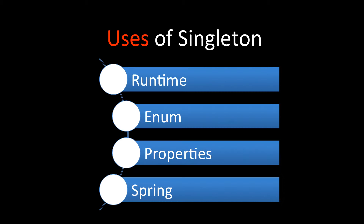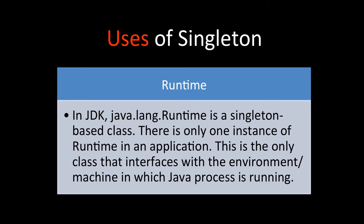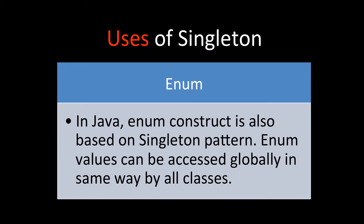Some of the main uses of the singleton design pattern in Java are: JDK Runtime, enum, properties, and Spring. In the Java JDK, java.lang.Runtime is a singleton-based class — there is only one instance of Runtime in an application, and it is the only class that interfaces with the environment or machine with Java processes running.